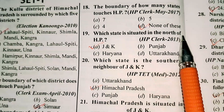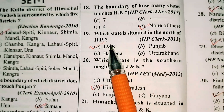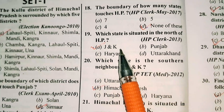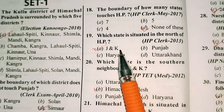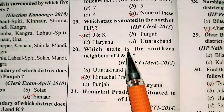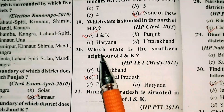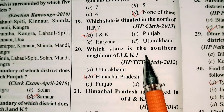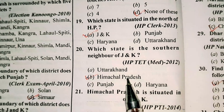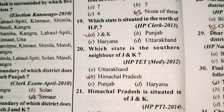Which state is situated in the north of Himachal Pradesh? Jammu and Kashmir. Which state is the southern neighbor of Jammu and Kashmir? Himachal Pradesh.